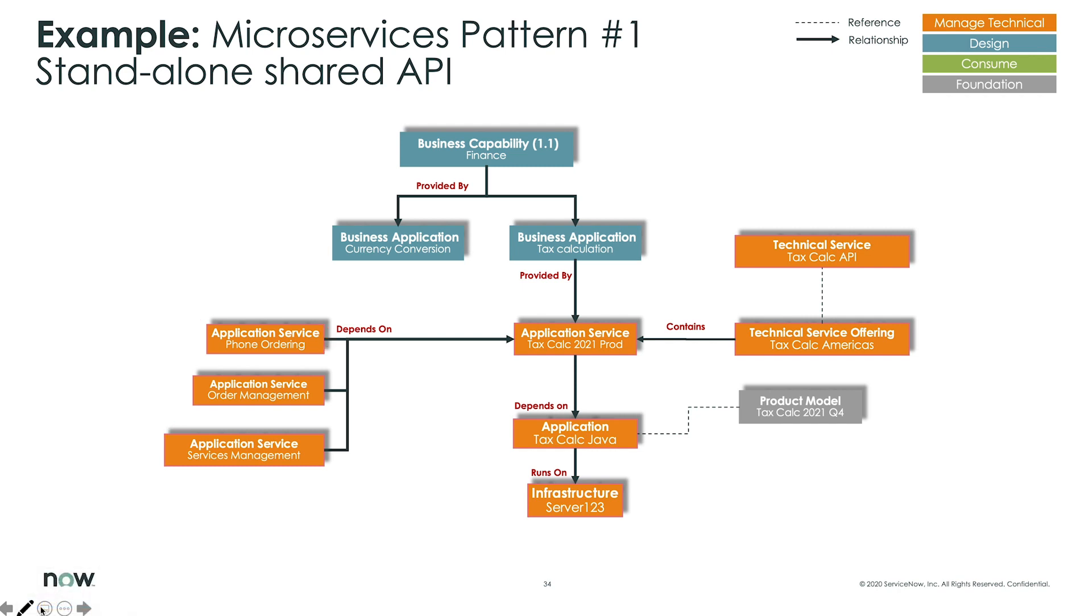So this is a typical scenario, multiple applications depending on the tax calculation, depending on what it is your architecture is and requires, and that can grow and expand. And basically, you still have to maintain that tax calculation for as long as you need it.